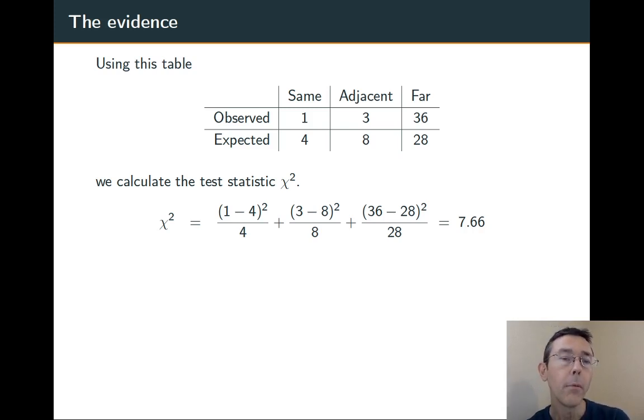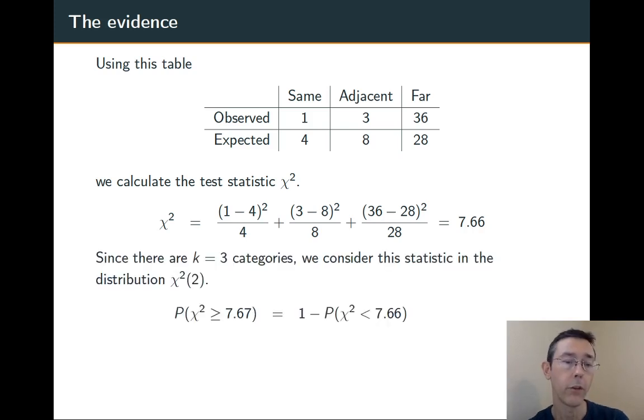So what's the probability of getting a value at least this large just through random chance? In the chi-squared of 2 distribution. 2 coming from the fact that we have 3 categories. We subtract 1 to get the number of degrees of freedom.